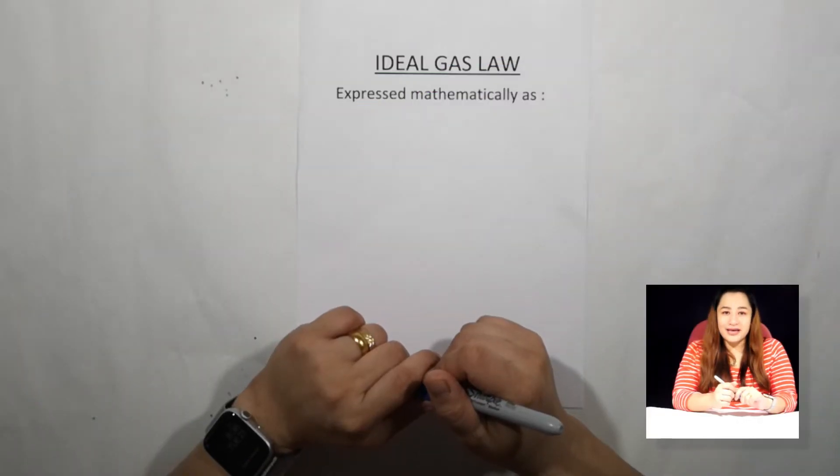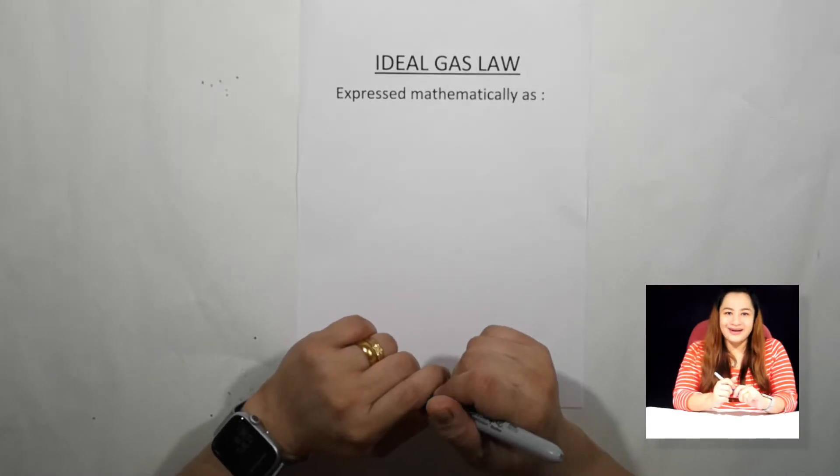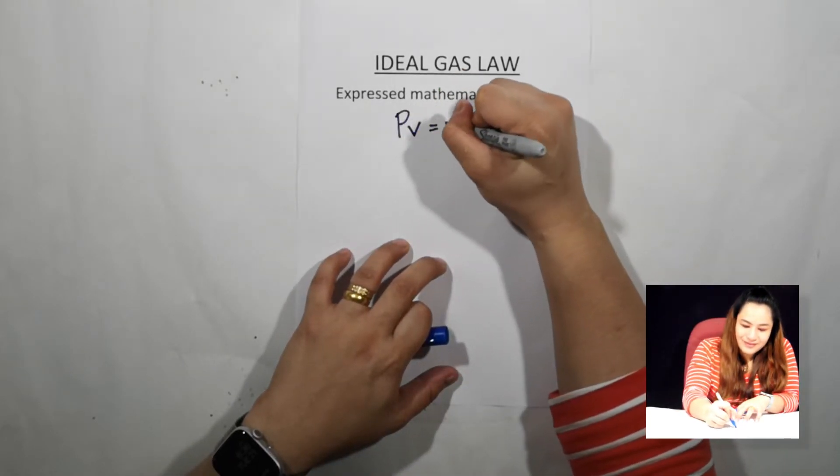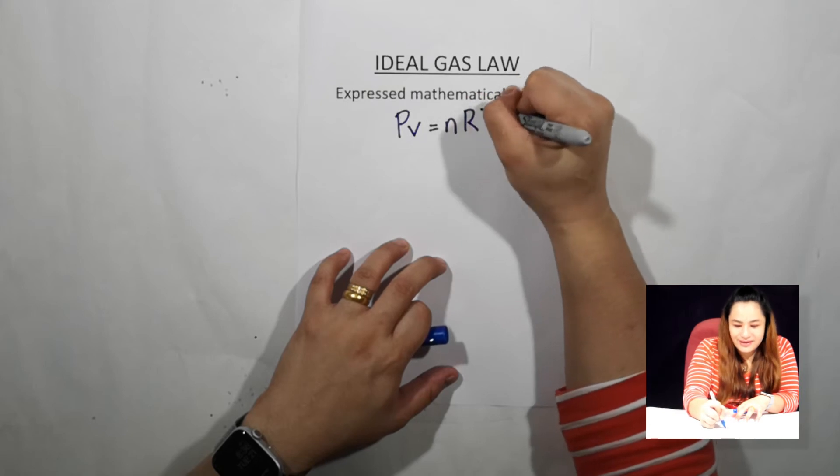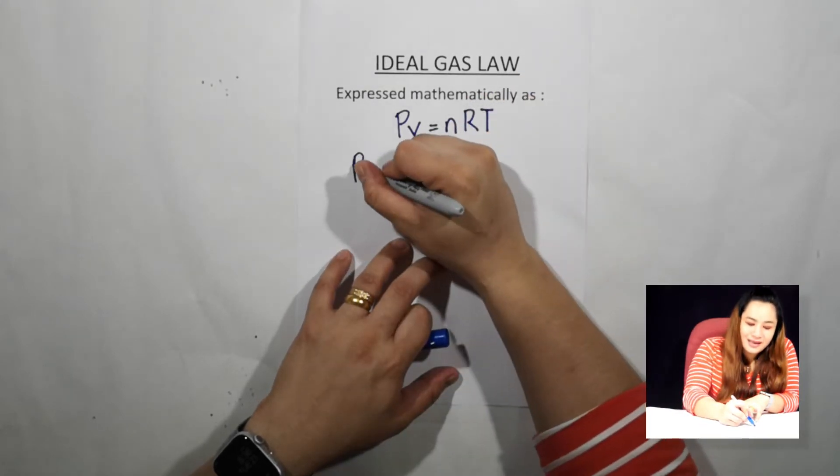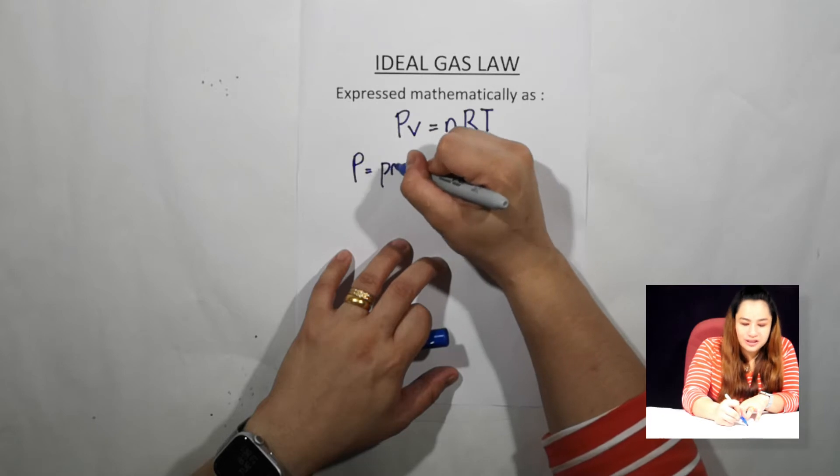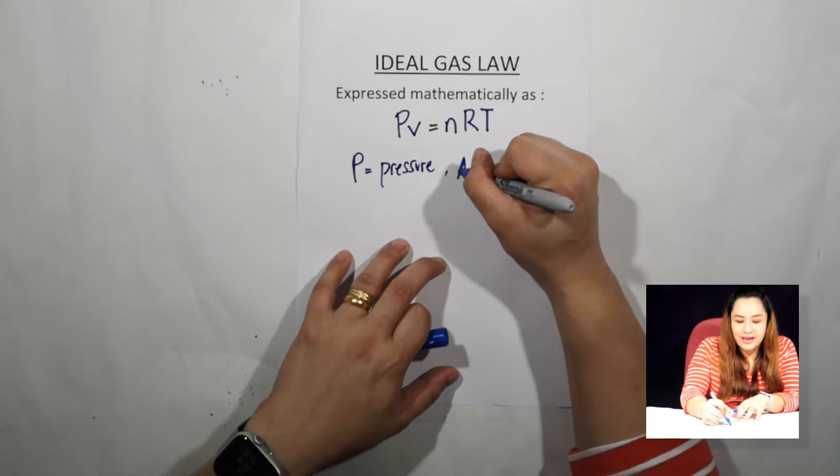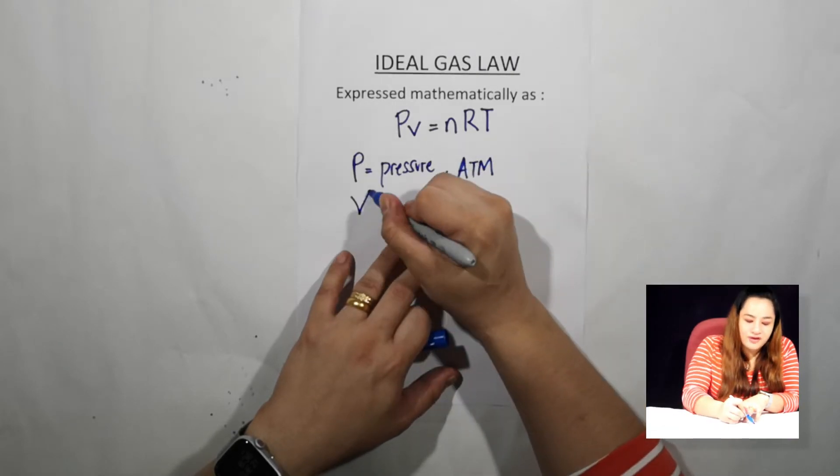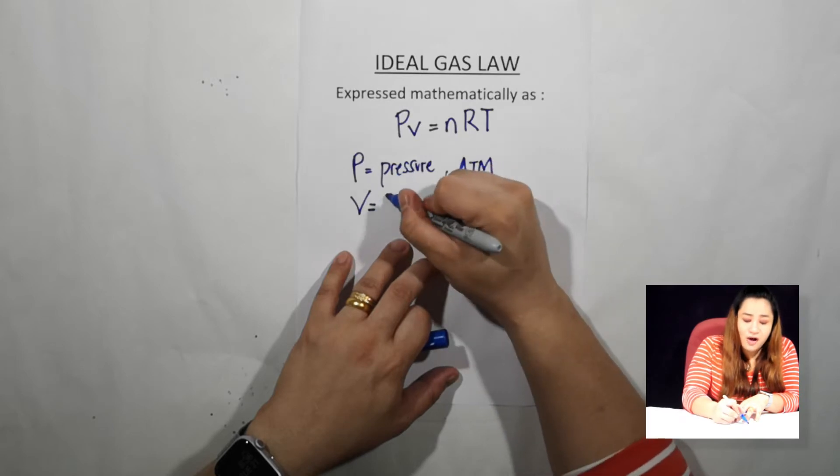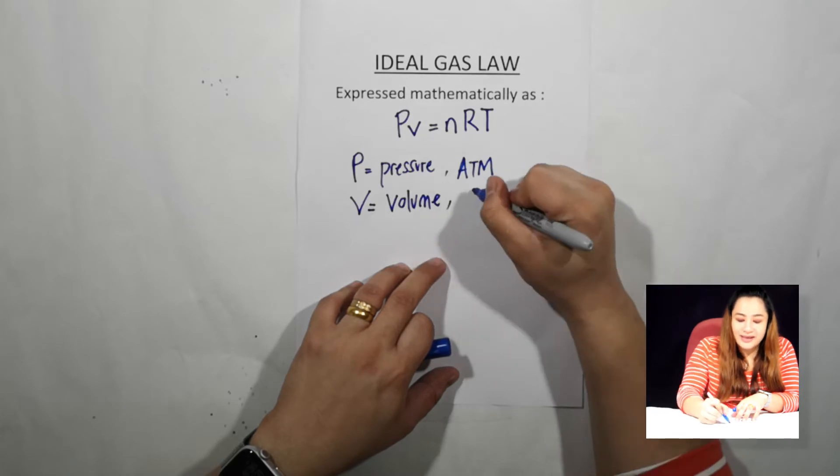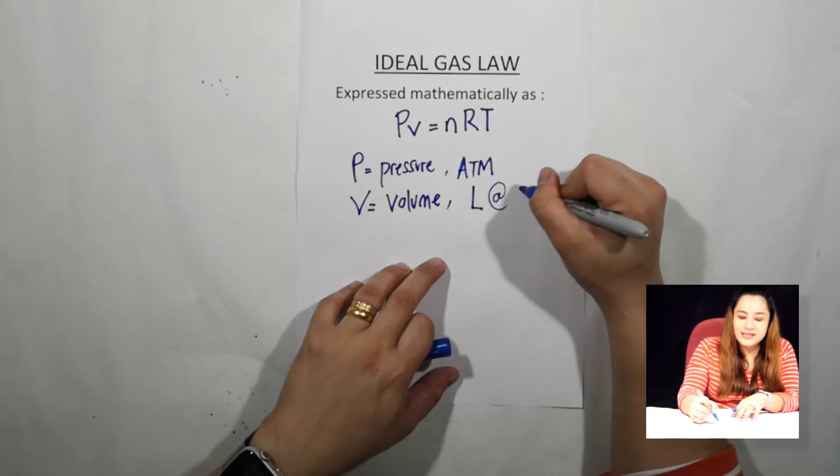The ideal gas law is expressed mathematically as PV = nRT. Where P equals pressure and the unit is atm. V is for volume and the unit is liter or dm³.